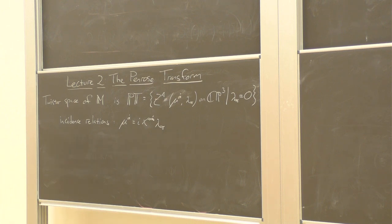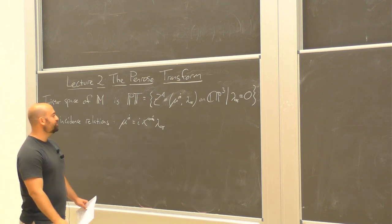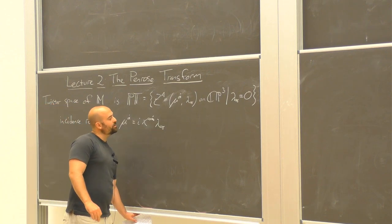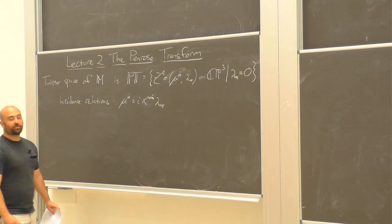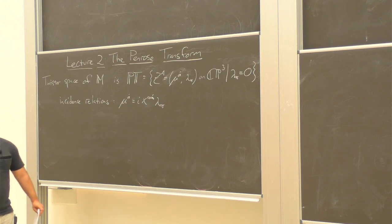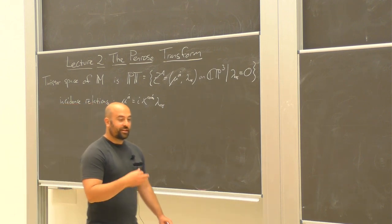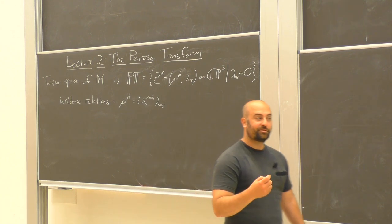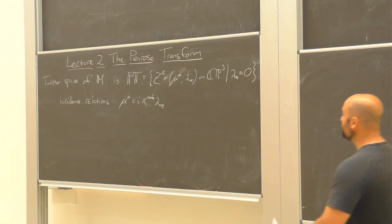By the converse, a point in twistor space gives a totally null two-plane in Minkowski spacetime. Today we're going to hopefully start learning a bit of the magic of this somewhat simple correspondence, and the thing we're going to talk about is how these basic facts allow us to start generating solutions to interesting partial differential equations in physics.